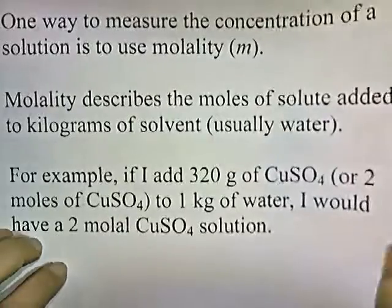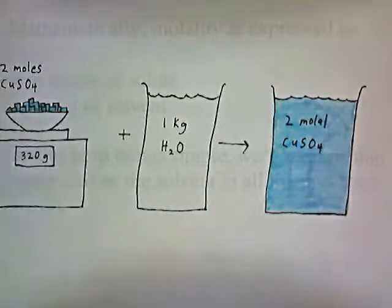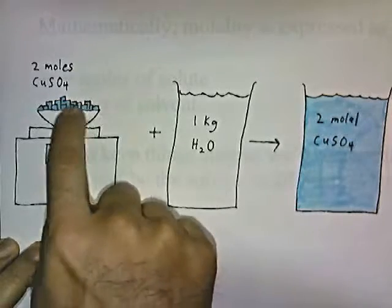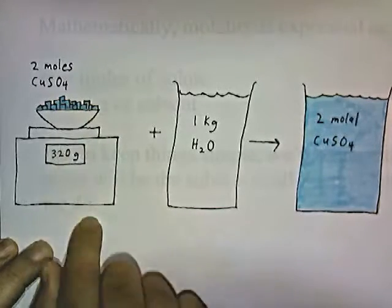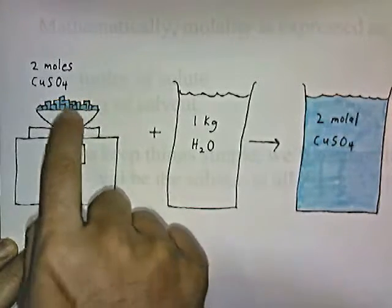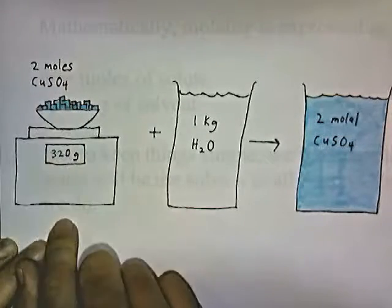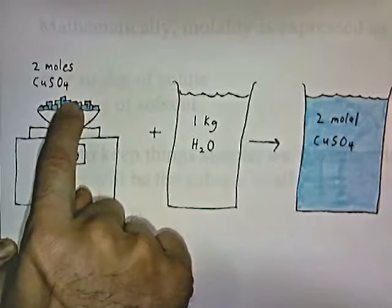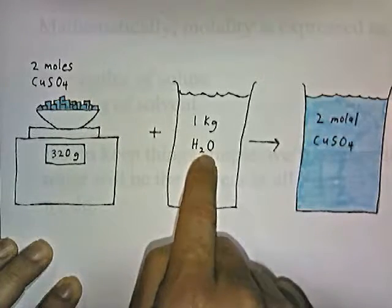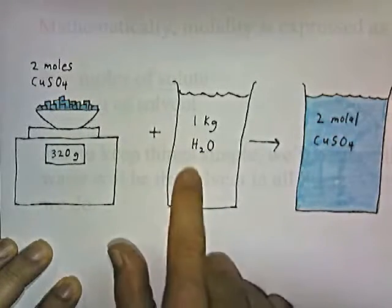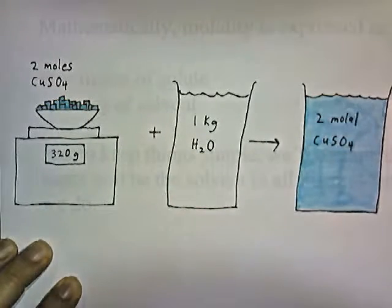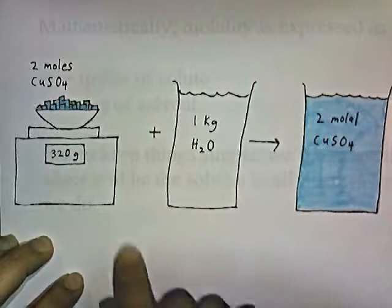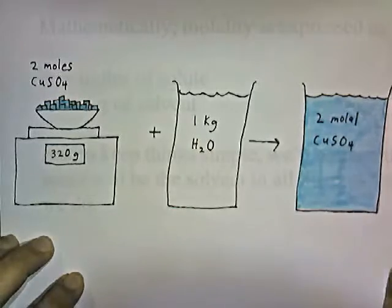Here's a picture of that. If I take 320 grams of copper sulfate, which is a blue crystal — and 320 grams of copper sulfate is the same as two moles of copper sulfate — and I dump these two moles of copper sulfate crystal into one kilogram of water, I'll end up with a 2 molal solution. So unlike molarity, molality is moles per kilogram of solvent.